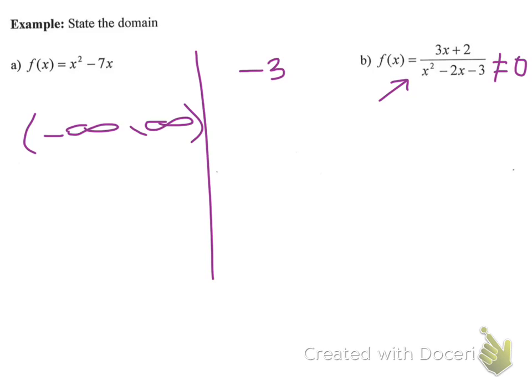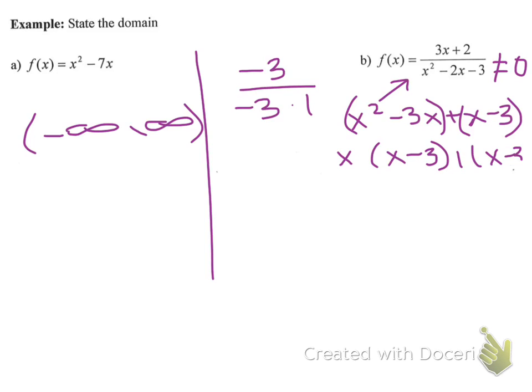I do A times C, which is negative 3. My combination I would use is negative 3 and a positive 1. So I would do x squared minus 3x plus 1x minus 3. We group them. If you do the box method, put those four terms in the box. I take out an x, I'm left with x minus 3. I take out a 1. So this quantity factors to be x minus 3 and an x plus 1.